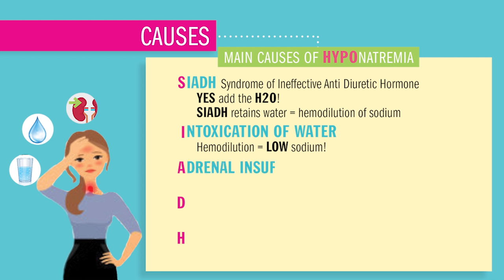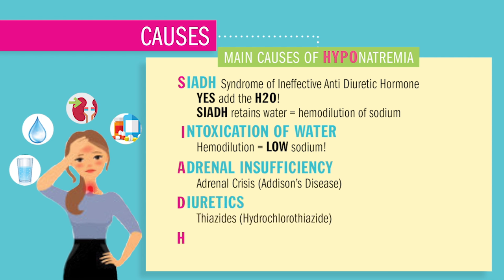A stands for adrenal insufficiency, like adrenal crisis with our Addison's disease patients — basically wasting sodium from the body and putting it in the potty. D is for diuretics, like thiazides and loop diuretics, generic names hydrochlorothiazide and furosemide. Both of these are considered potassium wasting as well as sodium wasting diuretics.